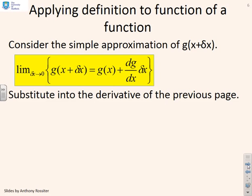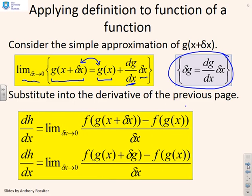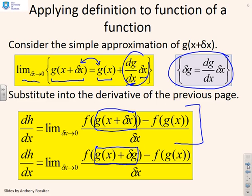From the limiting formula for differentiation, g(x + delta x) equals g(x) plus (dg/dx) times delta x. We can substitute this into the derivative. We can also write it as: delta g equals (dg/dx) times delta x, since delta g is simply the difference g(x + delta x) minus g(x). Making that substitution, we replace g(x + delta x) with g(x) plus delta g. Notice the subtle difference in bracket positions — that term is delta g.